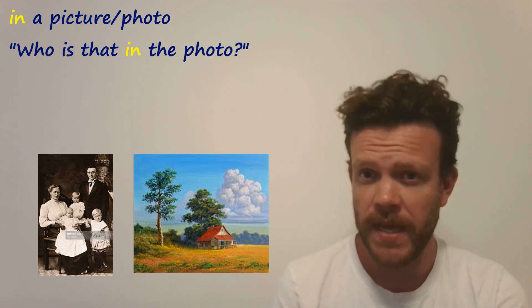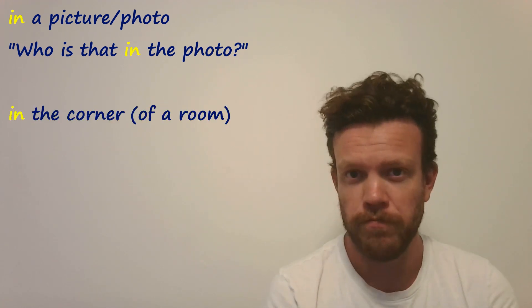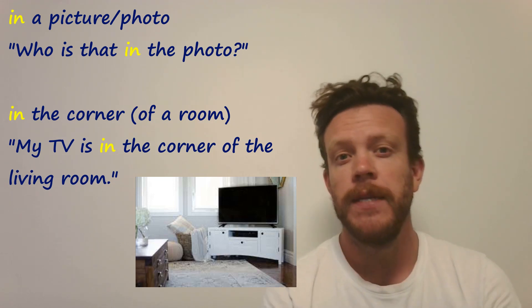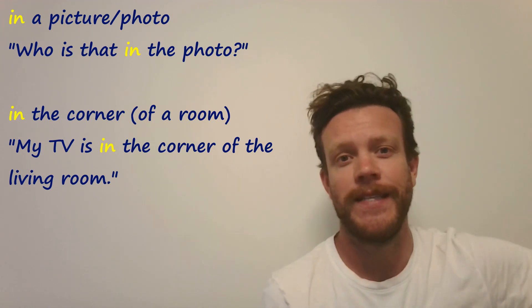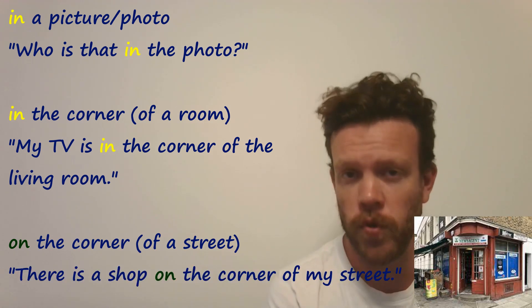Sit, lie, and stand get a bit more confusing, bringing in the preposition 'at' — I'll cover that in another video in the next few days, so make sure to like and subscribe to catch that. A couple more specific things in your house: we say 'in a picture or photo,' so 'Who is that in the photo?' And we say 'in the corner of a room,' so 'My TV is in the corner of the living room.' Outside it's different — we say 'on the corner,' as in 'There is a shop on the corner of my street.'